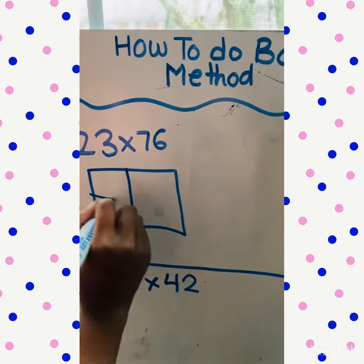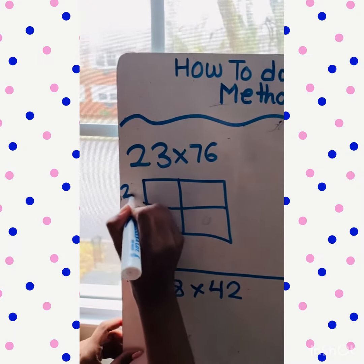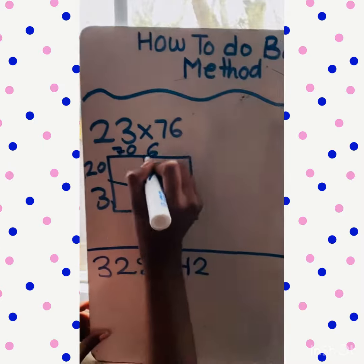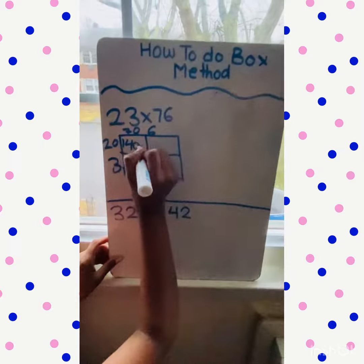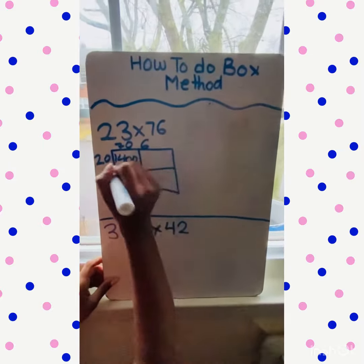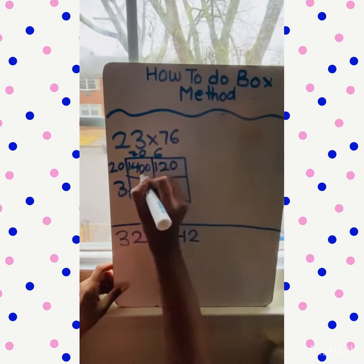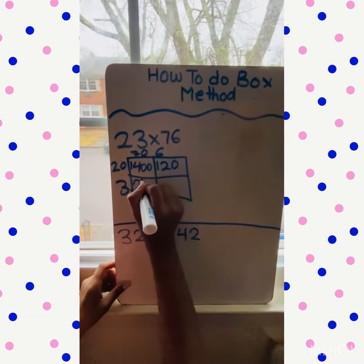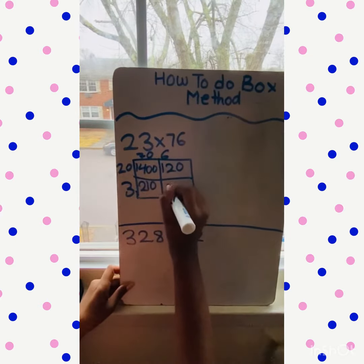Now, 23 is 20 and 3, and 76 is 70 and 6. So multiply 70 times 20, which is 14 and 2 zeros: 1400. 6 times 20 is 120. 70 times 3 is 210. 6 times 3 is 18.